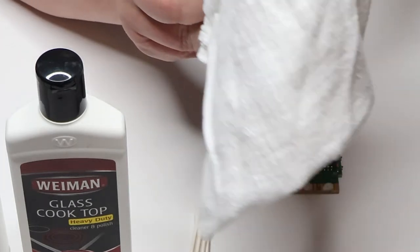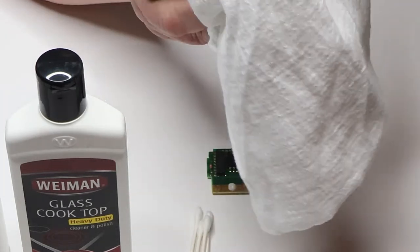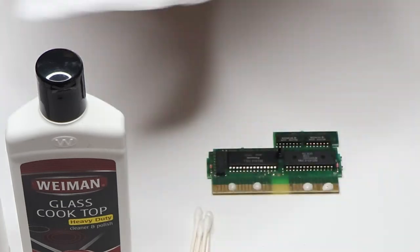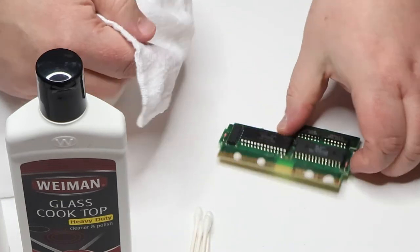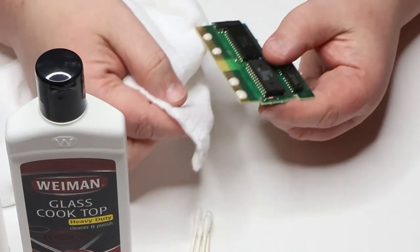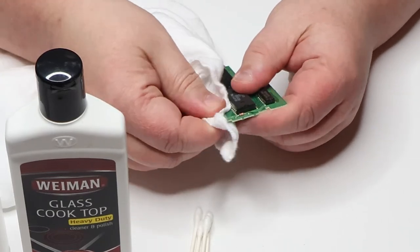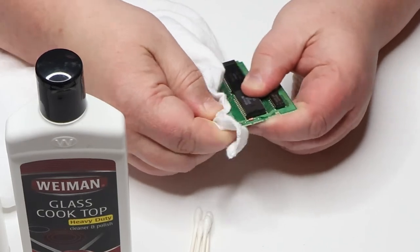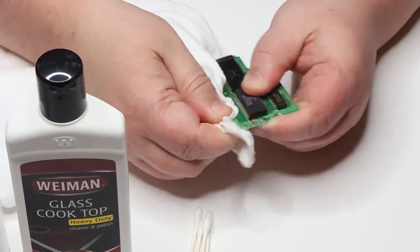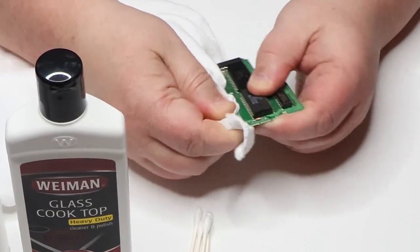We're going to take our cloth here. It's kind of like a cheesecloth - could be like an old t-shirt, a rag, something that's a soft, dust-free cloth is what you want to use here. And we are going to gently, nice and gently, work it in to the edges of the circuit board, the pins there, the gold pins.